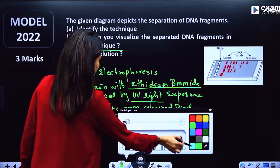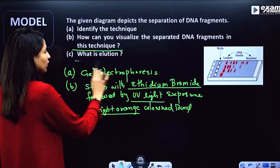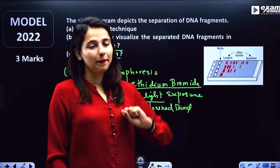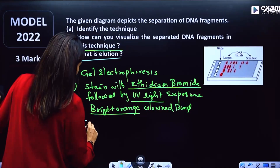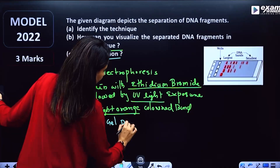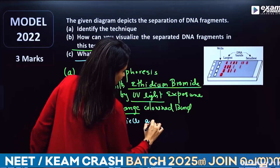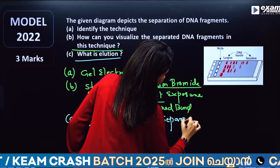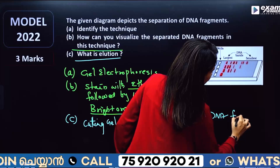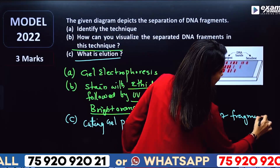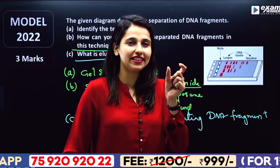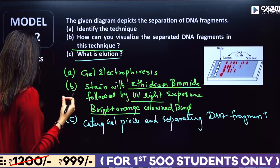We have to separate it by cutting the gel piece and separating the DNA fragment — that is called elution. If you have any DNA fragment in your mind, the gel piece is cut and the DNA fragment is separated.